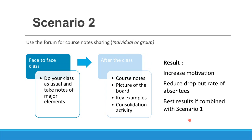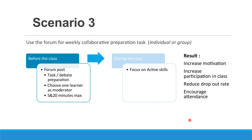We realized that this scenario, if combined with scenario one, is even more efficient — before class you receive a mail with a preparation task, and after class you receive a small mail with the course notes, which could be just a picture and maybe some text with key examples. The combination of the two is quite efficient. You could also sum it up in one post — a single mail with the course notes and the prep for the next class — it's up to you to decide which is more convenient.